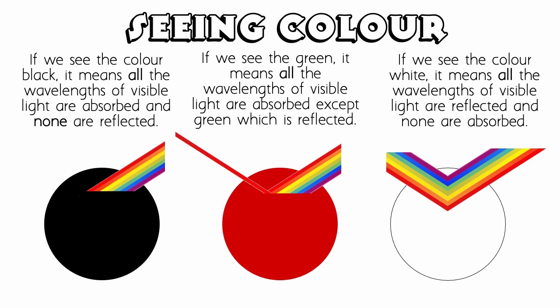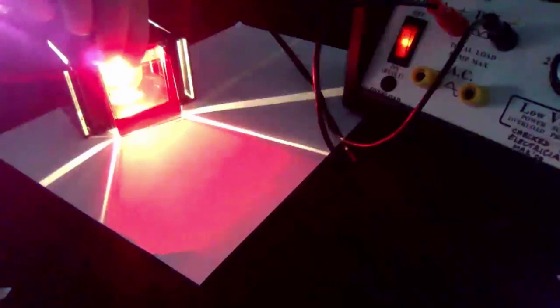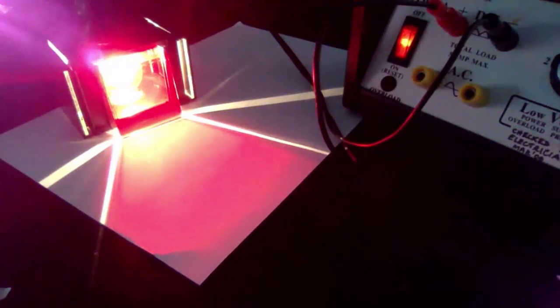Let's look at another example of this and the sort of experiment that you might do in a science lab investigating colour. This card here appears green because what's actually happening is that all of the colours in white light are being absorbed by this material except for the green part of the white light. The green part is being reflected back into our eye. Likewise, this card here is red because this material is absorbing all colours in white light except for the red one which is reflecting back into our eye.